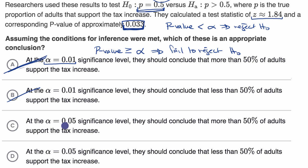At the alpha equals 0.05 significance level, they should conclude that more than 50% of adults support the tax increase. Well yeah, in this situation, we have our p-value, which is 0.033. It is indeed less than our significance level, in which case we reject the null hypothesis. And if we reject the null hypothesis, that would suggest the alternative, that the true proportion is greater than 50%. And so I would pick this choice right over here.